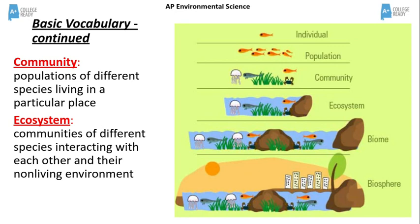An ecosystem is several communities of different species interacting with each other and their non-living environment. We refer to living things as biotic factors and non-living things as abiotic factors. In the diagram, the water and rocks represent the abiotic factors. The diagram also shows a biome, which is a larger area, and the biosphere, which includes all areas where living things are found on or near Earth.